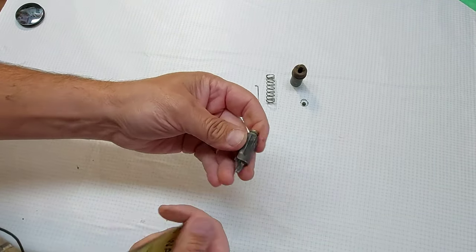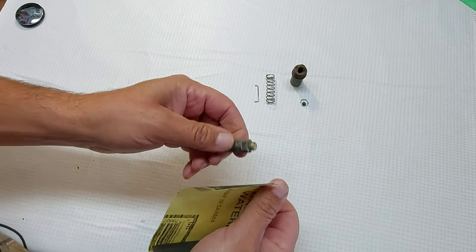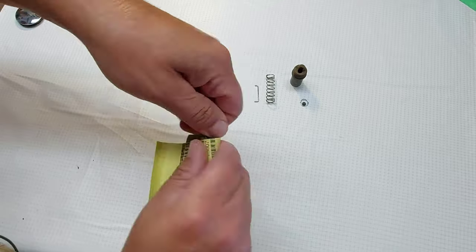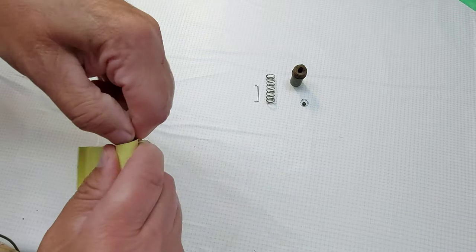We're going to take this other part of the mechanism and clean it up really quick too. So we're just going to wrap it with this sandpaper. Just give it a few spins.